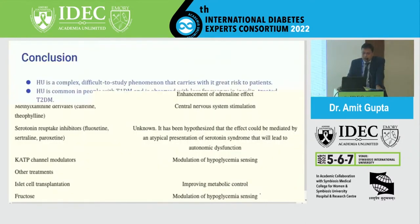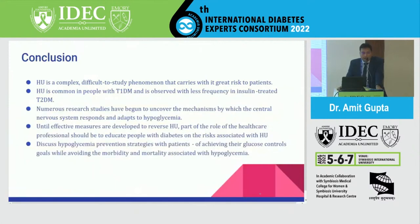In conclusion, HU is a complex and difficult-to-study phenomenon that carries greater risk to patients. It is common in type 1 diabetes and also seen in type 2 diabetes. Numerous research studies have begun to uncover how the CNS responds and adapts to hypoglycemia. Until effective measures to reverse HU are developed, healthcare professionals must educate patients about the risks associated with HU and discuss hypoglycemia prevention strategies to achieve glucose control while minimizing associated morbidity and mortality.